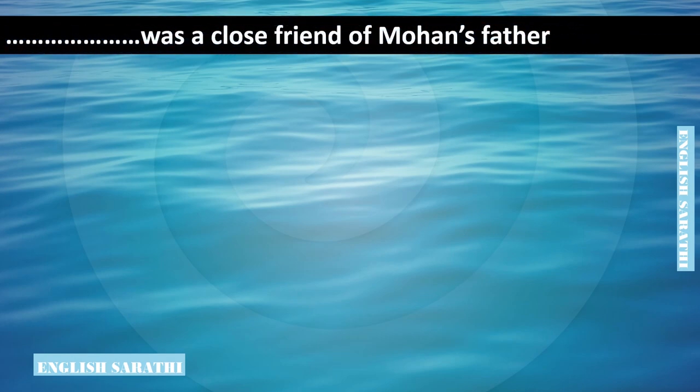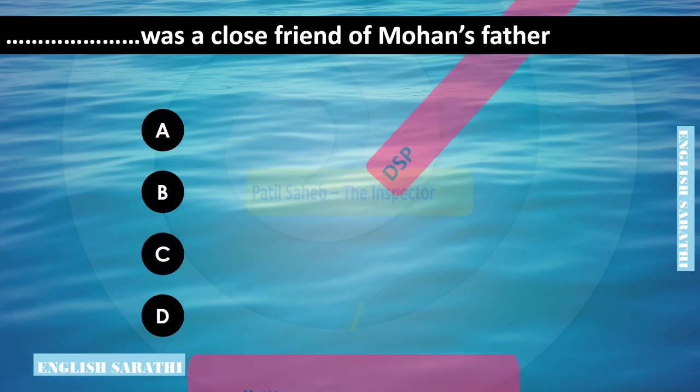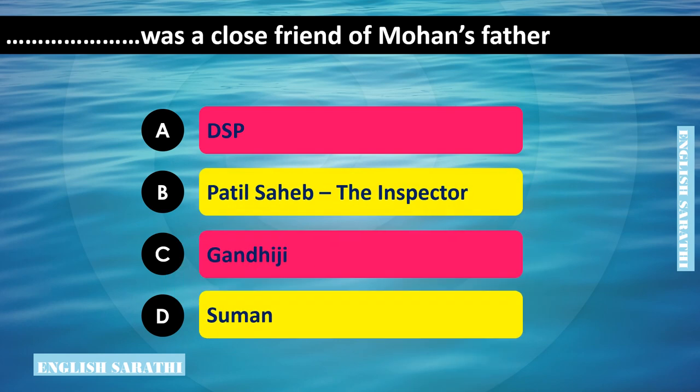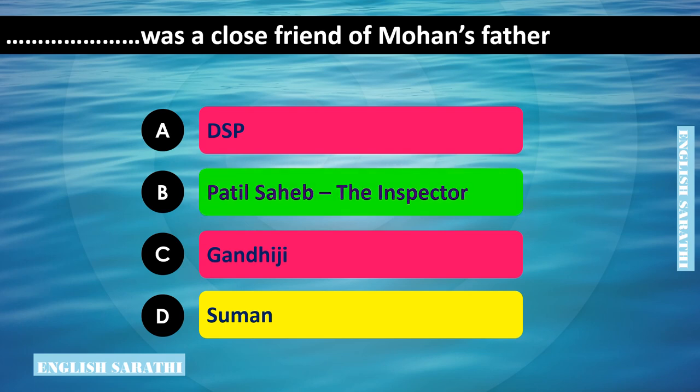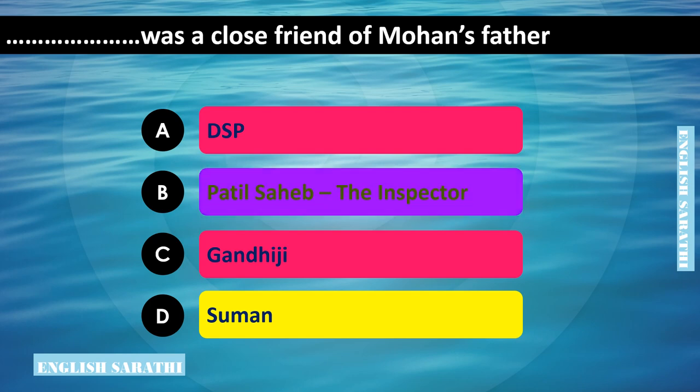Dash was a close friend of Mohan's father. Options are: option A - DSP, option B - Patil Sahib the inspector, option C - Gandhiji, option D - Suman. The correct option is option B - Patil Sahib the inspector. Patil Sahib the inspector was a close friend of Mohan's father.